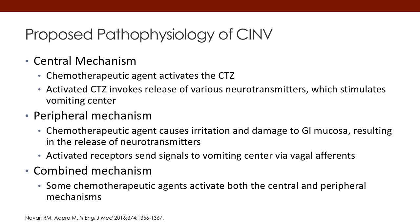The peripheral mechanism is that chemotherapeutic agents cause an irritation and damage to GI mucosa. When you see this damage to GI mucosa, this also results in the release of neurotransmitters.